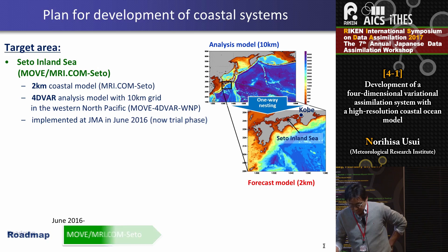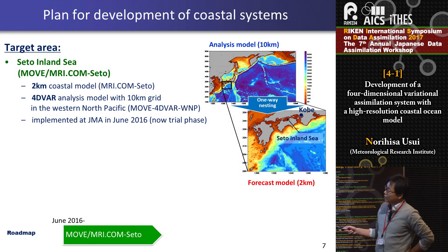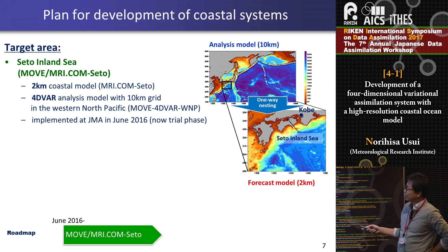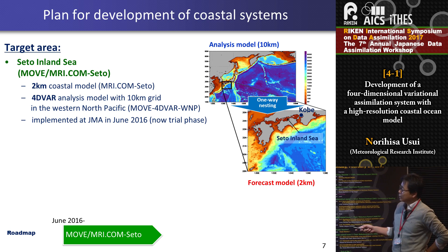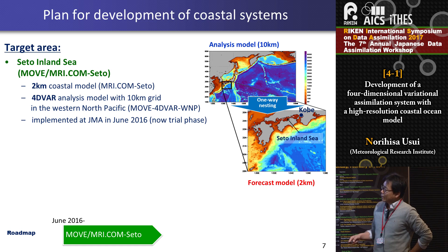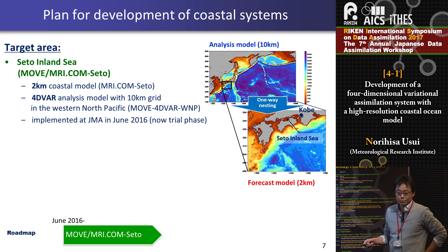We developed a prototype system, and its target area is the Seto Inland Sea, located in western Japan. Kobe also faces the Seto Inland Sea. This system consists of two models: a 2-kilometer coastal model and the 4D-var analysis model for the Western North Pacific. This system has already been implemented at JMA in June last year and is now in a trial phase.